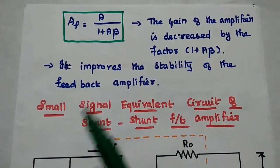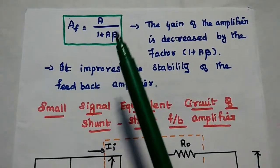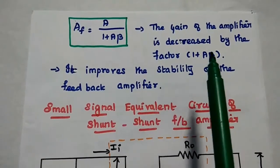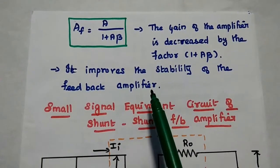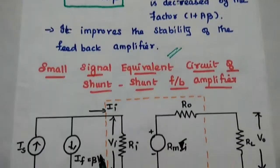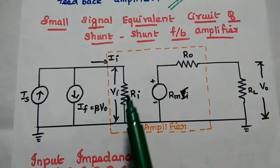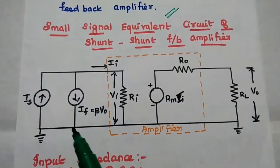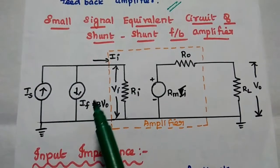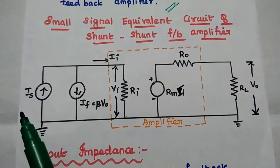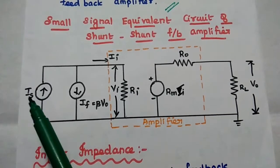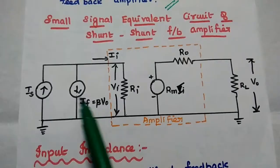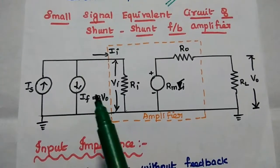The gain with feedback AF equals A divided by (1 plus A·beta). The gain of the amplifier is decreased by the factor (1 plus A·beta), thereby increasing the stability of the feedback amplifier. Next, we are going to analyze the input impedance and output impedance of this shunt-shunt feedback amplifier. The input signal is a current signal, and the feedback signal is also a current signal, so the feedback signal is connected in parallel with the source input signal.